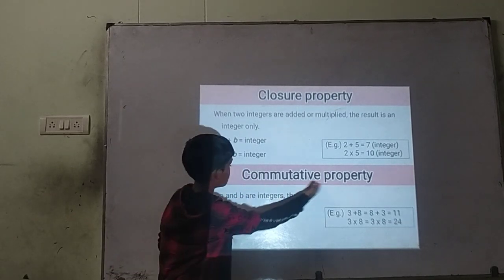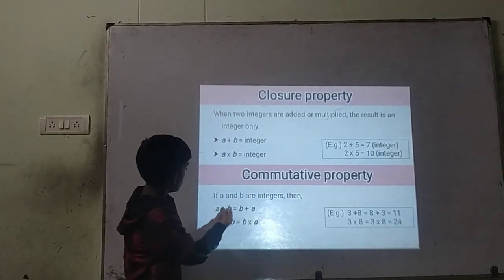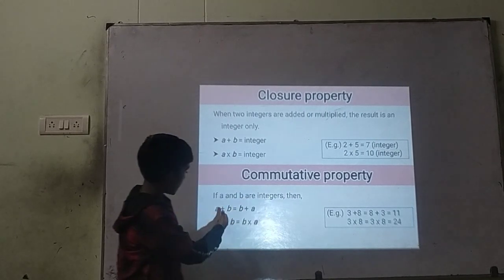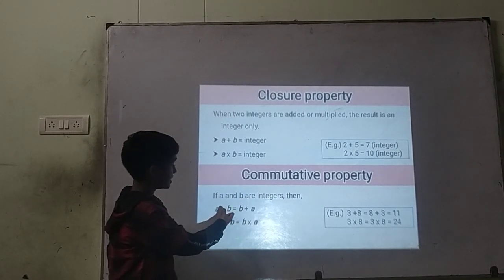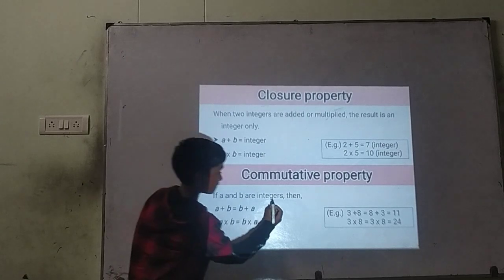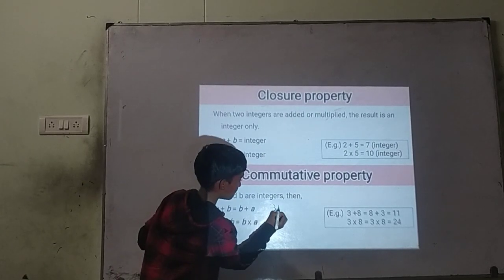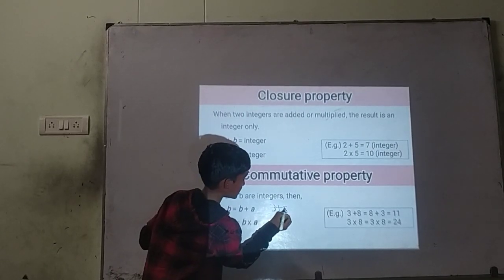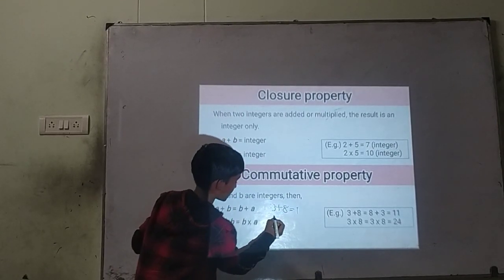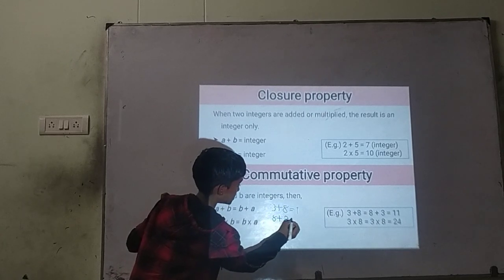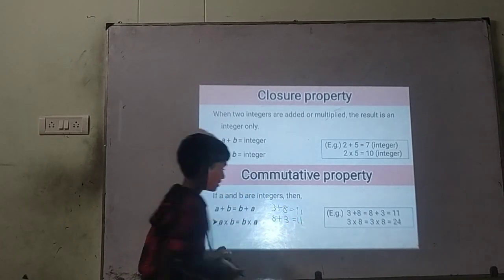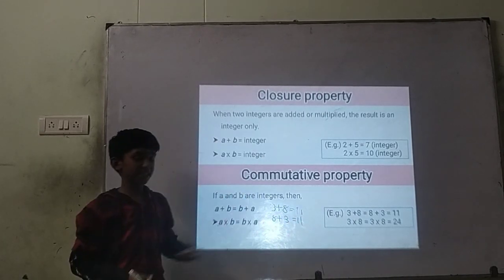Commutative property. If A and B are integers, then A plus B is equal to B plus A. For example, 3 plus 8 is equal to 11, and 8 plus 3 is also equal to 11.